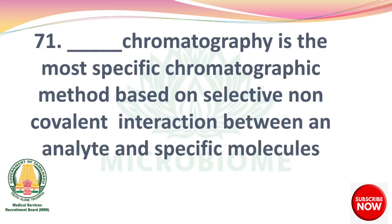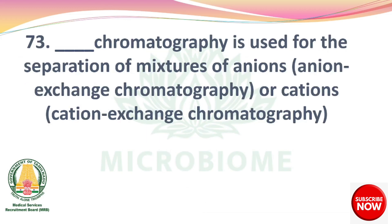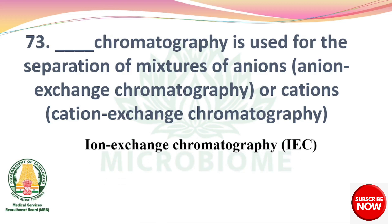Next, dash chromatography is the most specific chromatographic method based on selective non-covalent interaction between an analyte and specific molecules — affinity chromatography. Next, measurement of the volume of unknown solution (the analyte) with a known concentration of reagent is called titration. Next, dash chromatography is used for the separation of anions (anion exchange chromatography) or cations (cation exchange chromatography) — ion exchange chromatography (IEC).